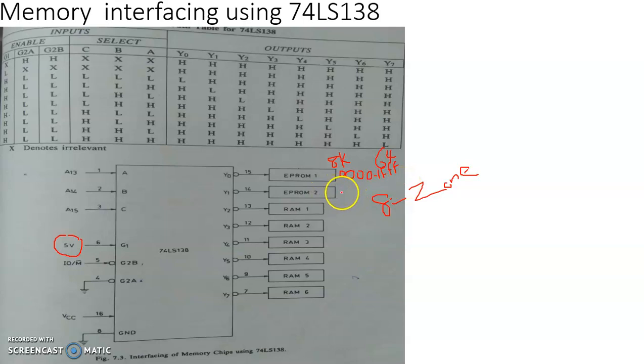Second zone will have address from 2, 0, 0, 0 to 3, F, F, F, etc. So like that it goes. We will see these addresses in the very next slides. So this actually represents 8 different kilobytes of memory locations.